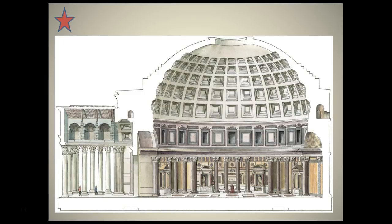The dome is 20 to 25 feet thick and was created using a mixture of mortar, lime, stones, tufa, and volcanic ash. The recipe for this mixture changed from heavy to light as the height of the dome increased towards the apex or oculus — heavier at the base and a lighter mixture as it approached the oculus.